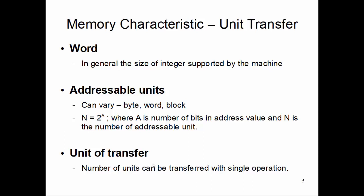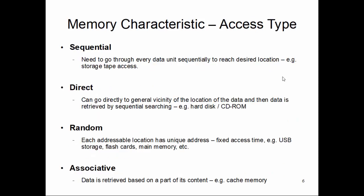From access type characteristics, we can divide the memories into mainly four parts. Sequential memory, where we need to go through every data unit sequentially to reach the desired location, like a storage tape. Like let's say you want to write something in the middle of the tape, what I need to do is actually reel down or reel up this entire tape until we reach the middle of the tape where the read-write mechanism head reaches the middle of the tape, and then we can access read or write on the middle of the tape. So that's a sequential.